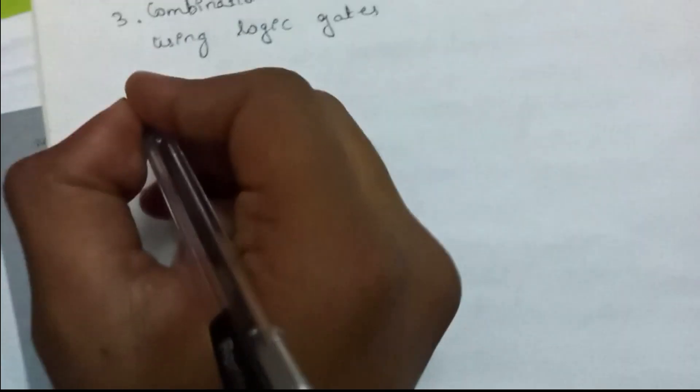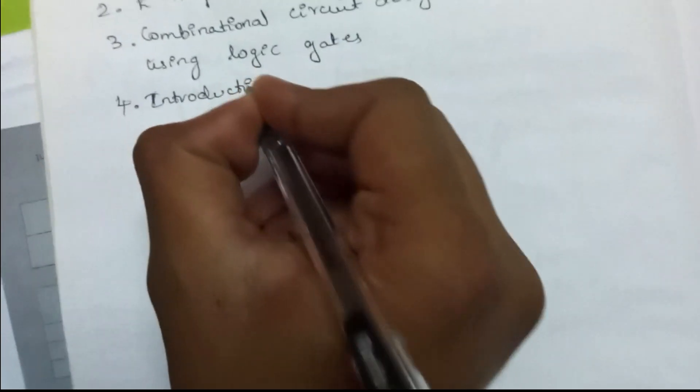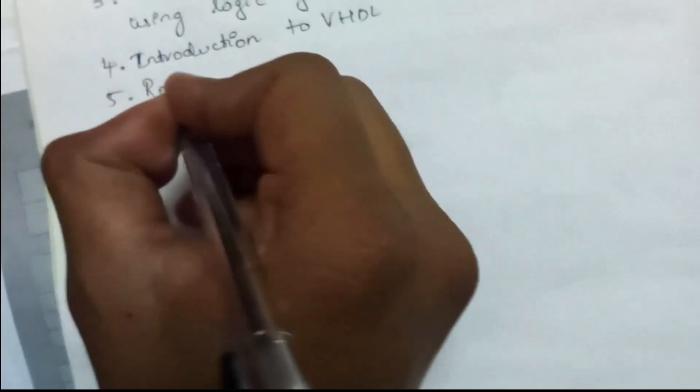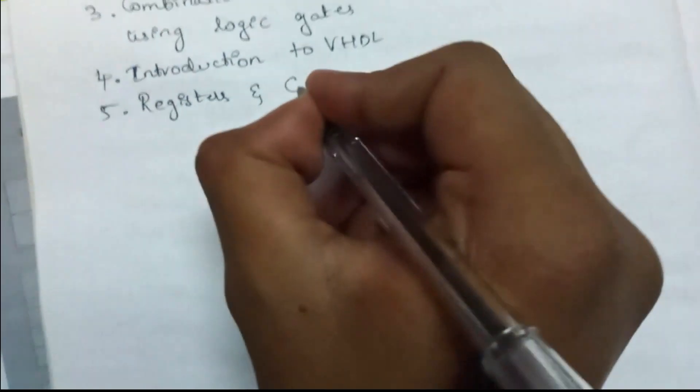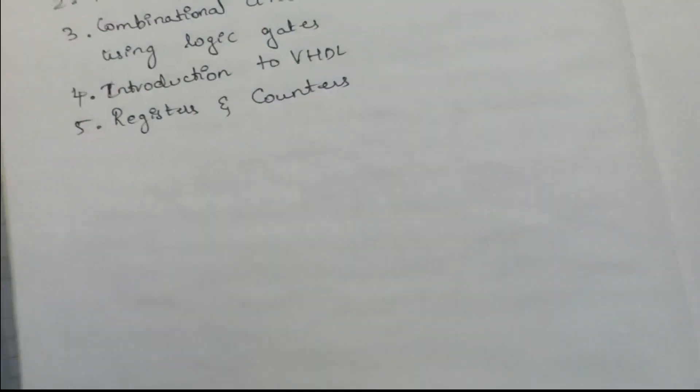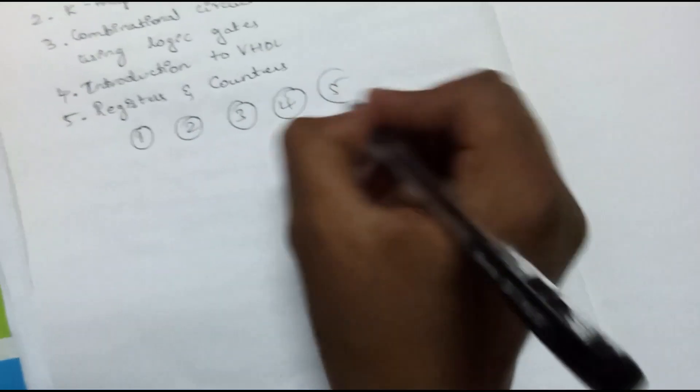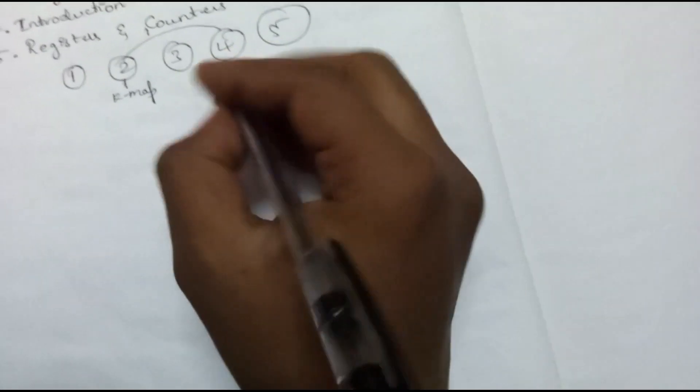Module 4: stimulation using logic gates. Module 5: introduction to VHDL, registers and counters. Each module contains 20 marks, so all together 100 marks across five modules. Study order: go with second module K-map, then fourth module, and in this only study flip-flops and latches.